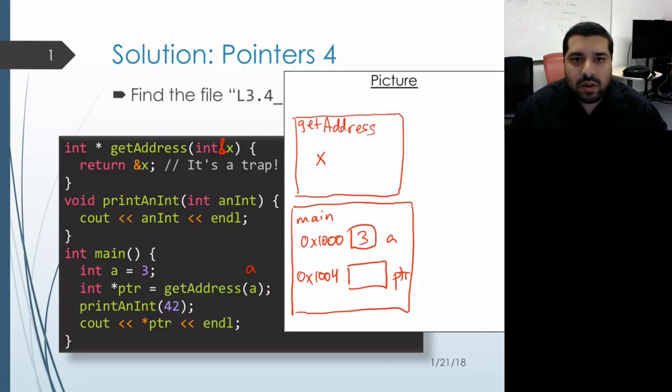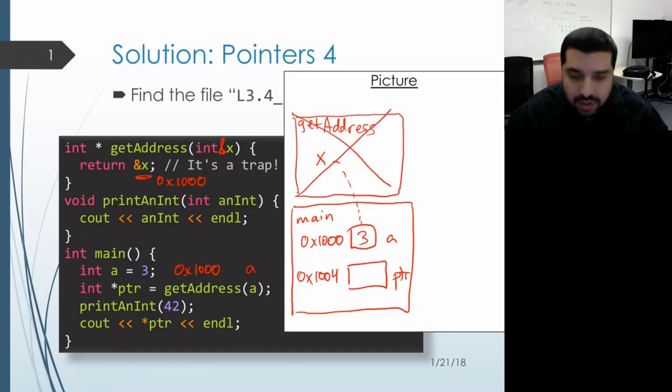So our next step is to actually initialize the parameters using the arguments. So that initializes X to be an alias for that object named by A inside of main. Now we run our code inside of our function. And we obtain the address of X, but X is an alias for that object in main. And its address is actually going to be 1000. So that's our return value. And that's what replaces our call to getAddress. But before main continues onward, our stack frame or activation record goes away.